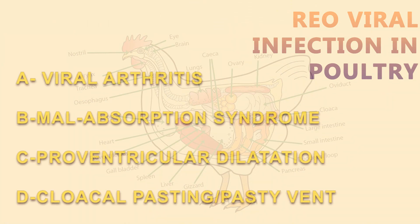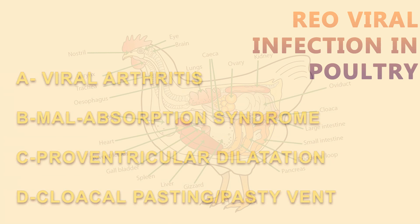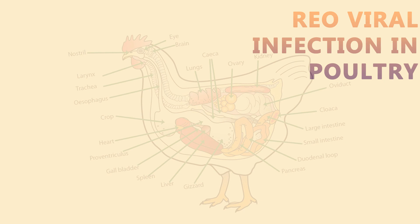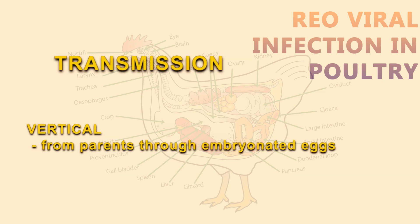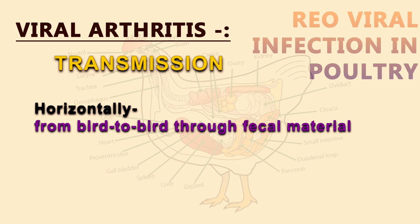The most important disease conditions are Viral Arthritis, Malabsorption Syndrome, Proventricular Dilatation or Proventriculitis, and Cloacal Pasting or Pasty Vent Disease. The disease transmits in two different ways: one is vertical transmission from mother to chicks, and the other is horizontal transmission from bird to bird in the flock.